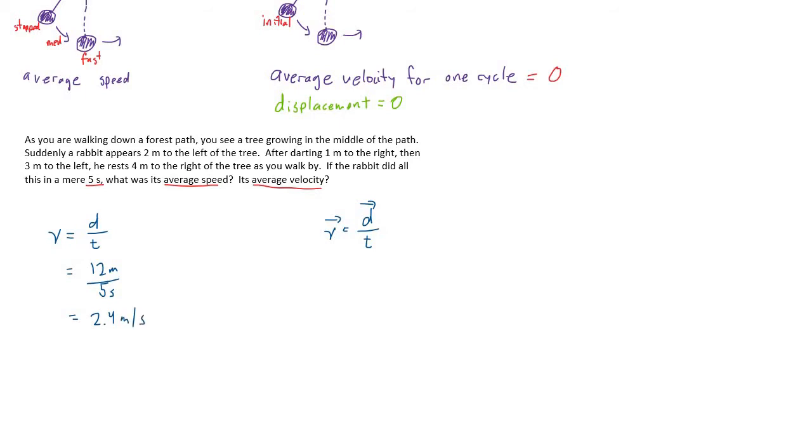But note that we're only given one significant digit in our information, so we round this to 2 meters per second.